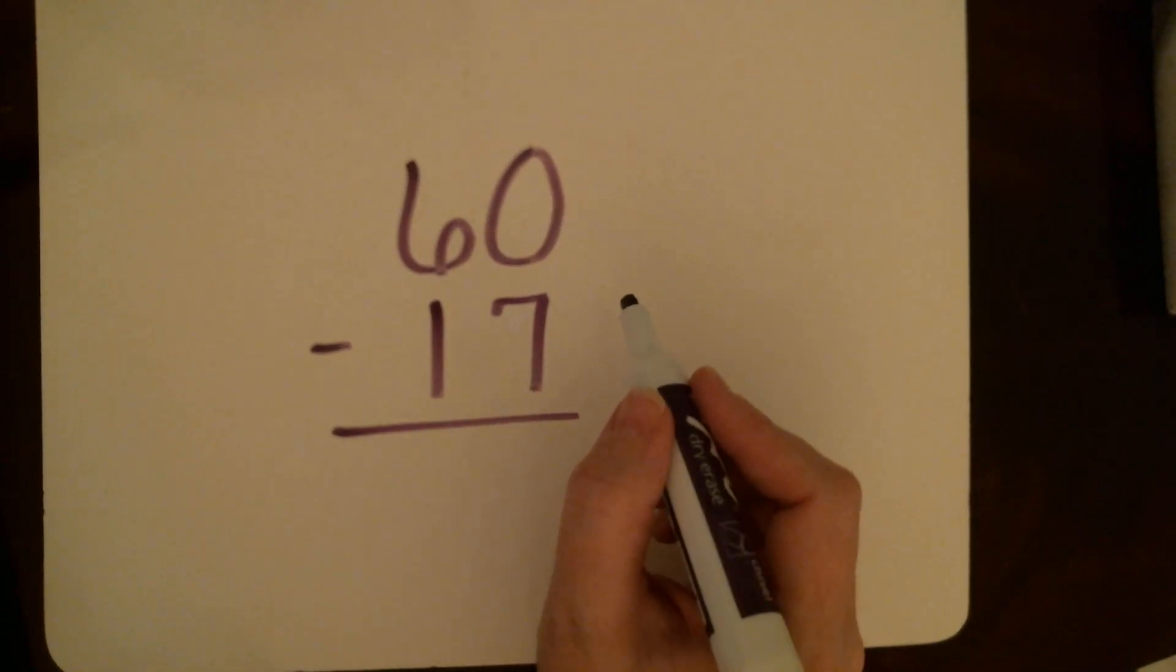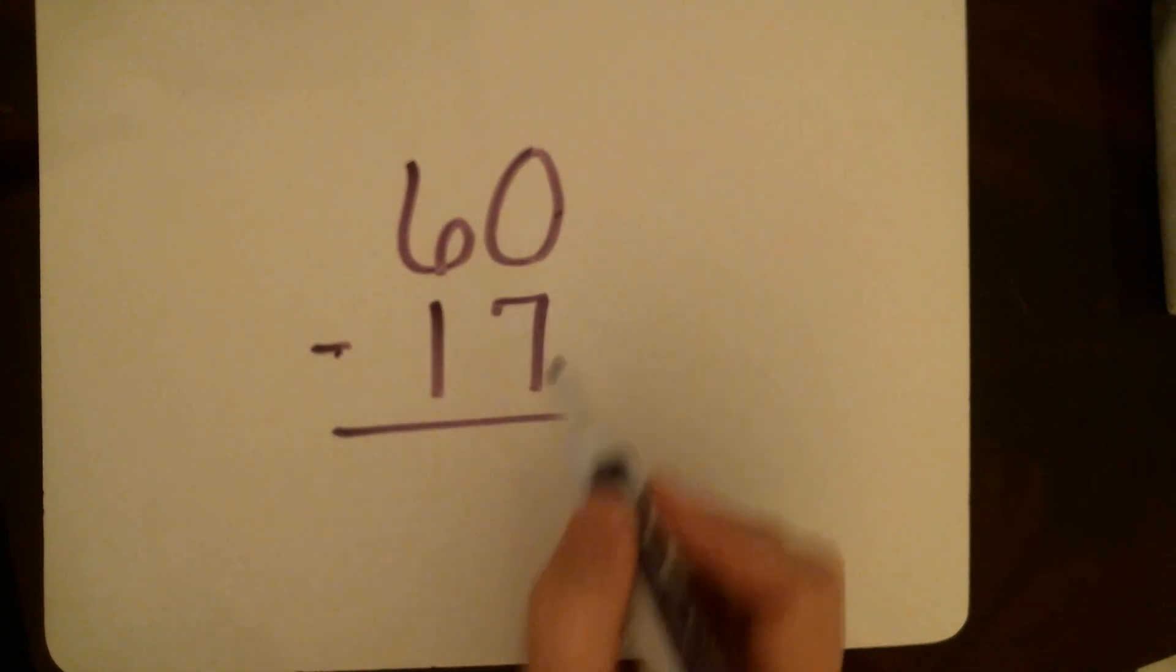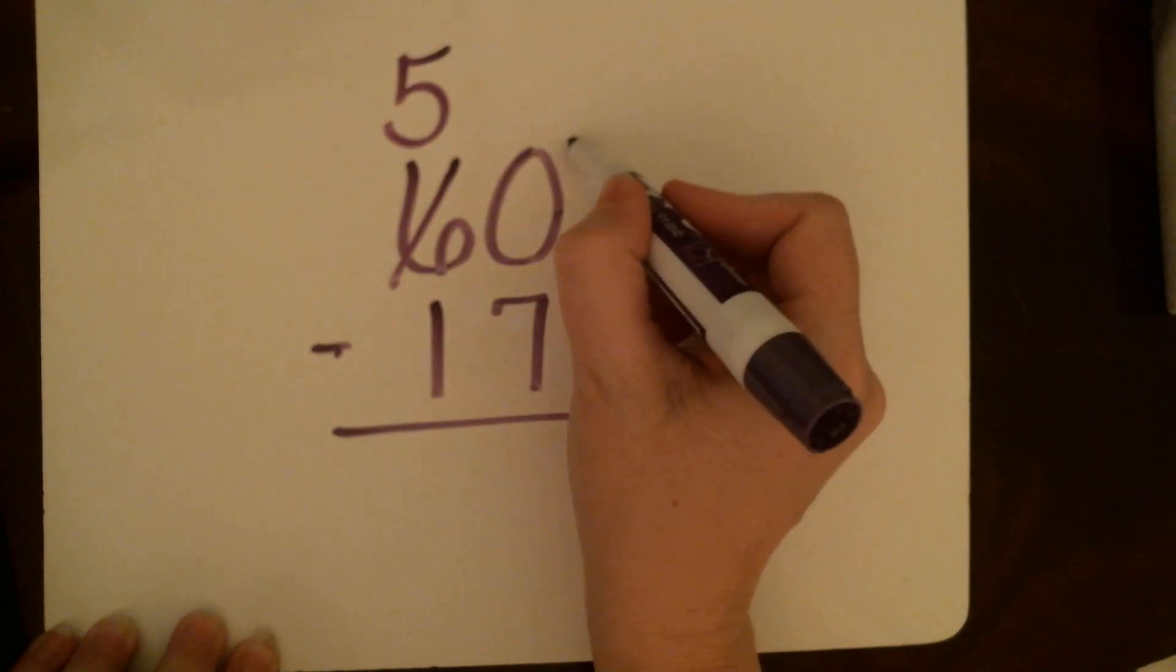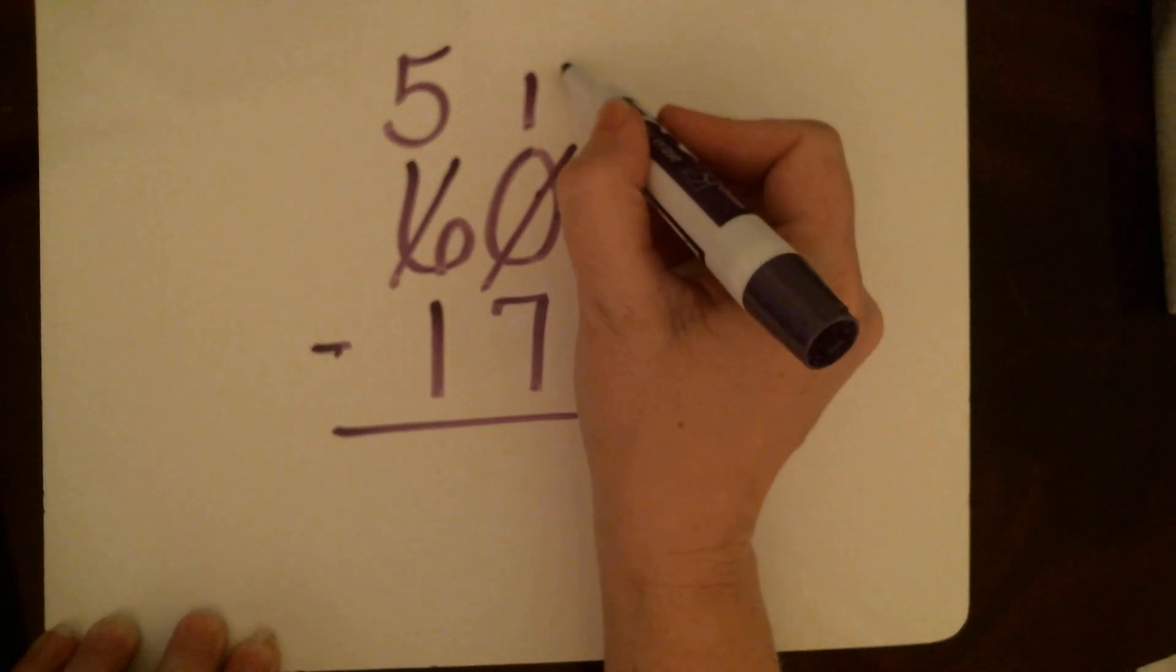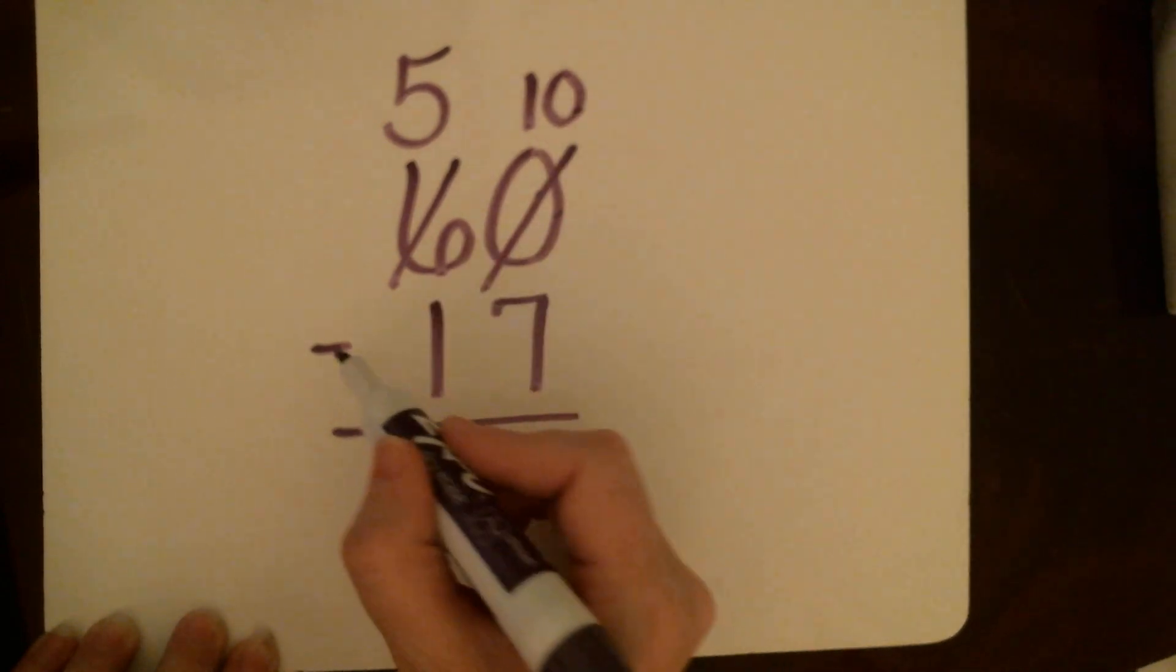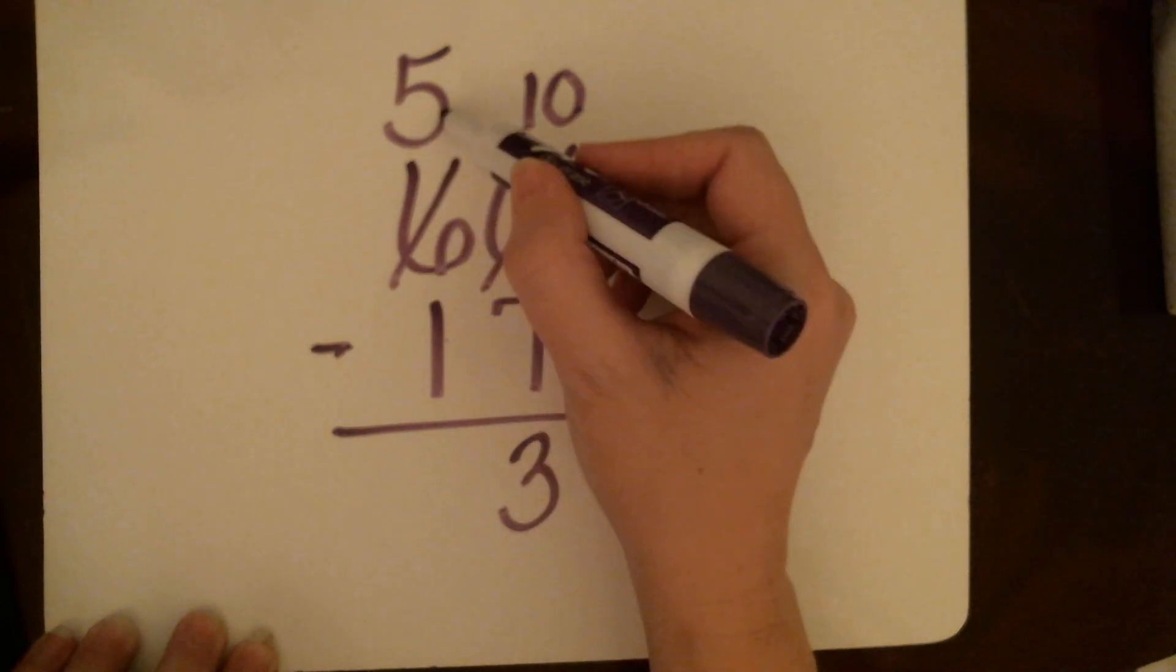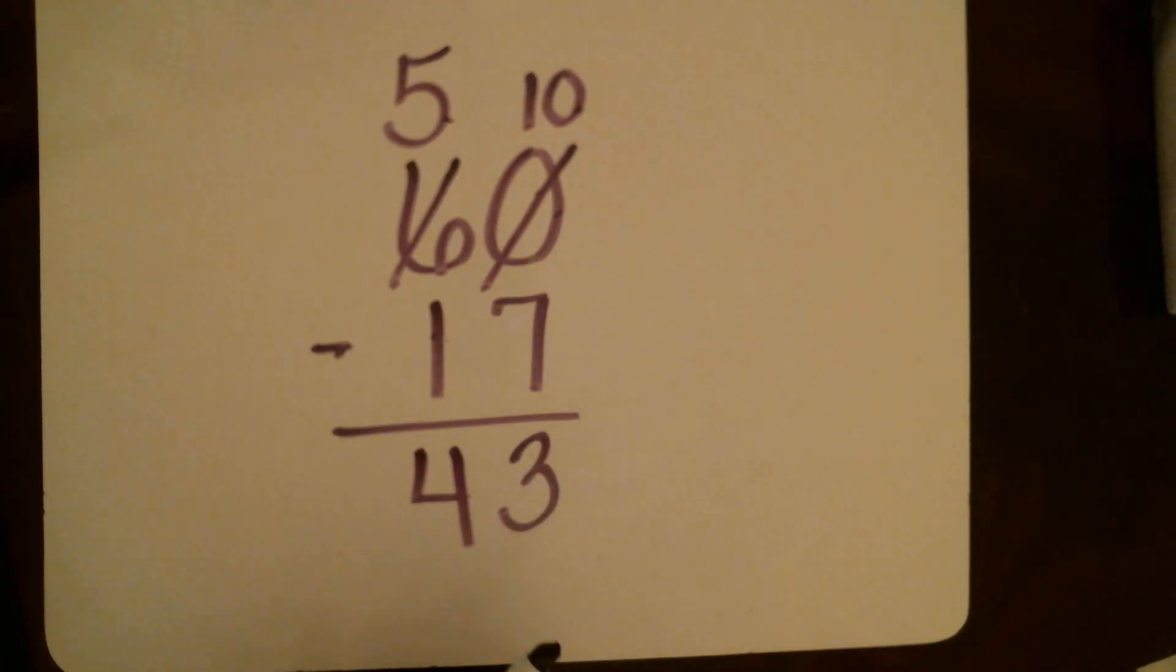Let's do another one: sixty minus seventeen. I have zero ones. If I have zero ones, can I take seven away from that? No, I do not have enough. Remember if you don't have enough, you go next door and get ten more. I now have five tens. I move that ten next door to the ones, break it into ten ones plus zero ones that I already had, that gives me ten ones. Now I'm ready to subtract. Ten ones minus seven ones is three ones. Five tens or fifty minus one ten which is ten, fifty minus ten is forty. So sixty minus seventeen is forty-three.